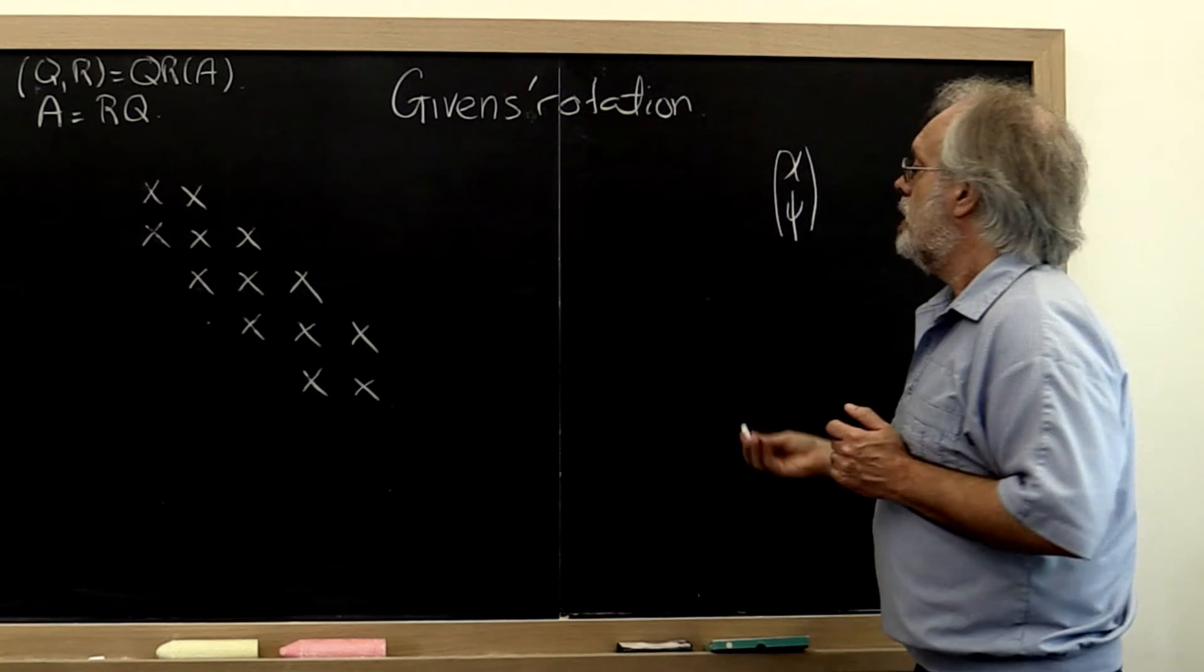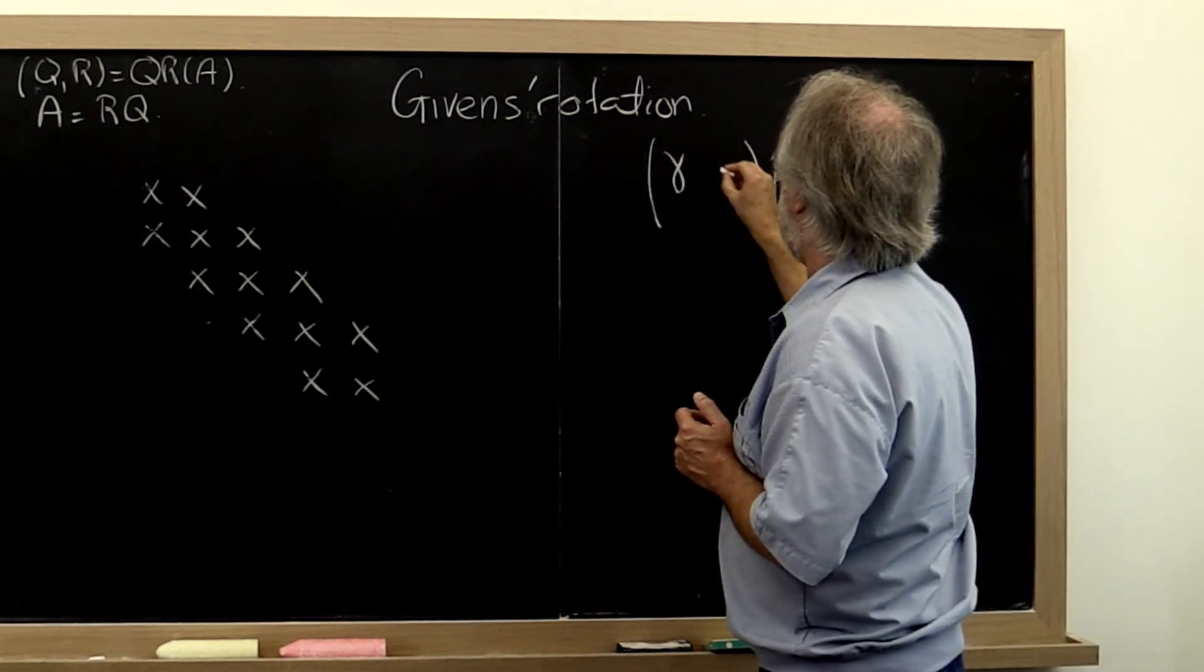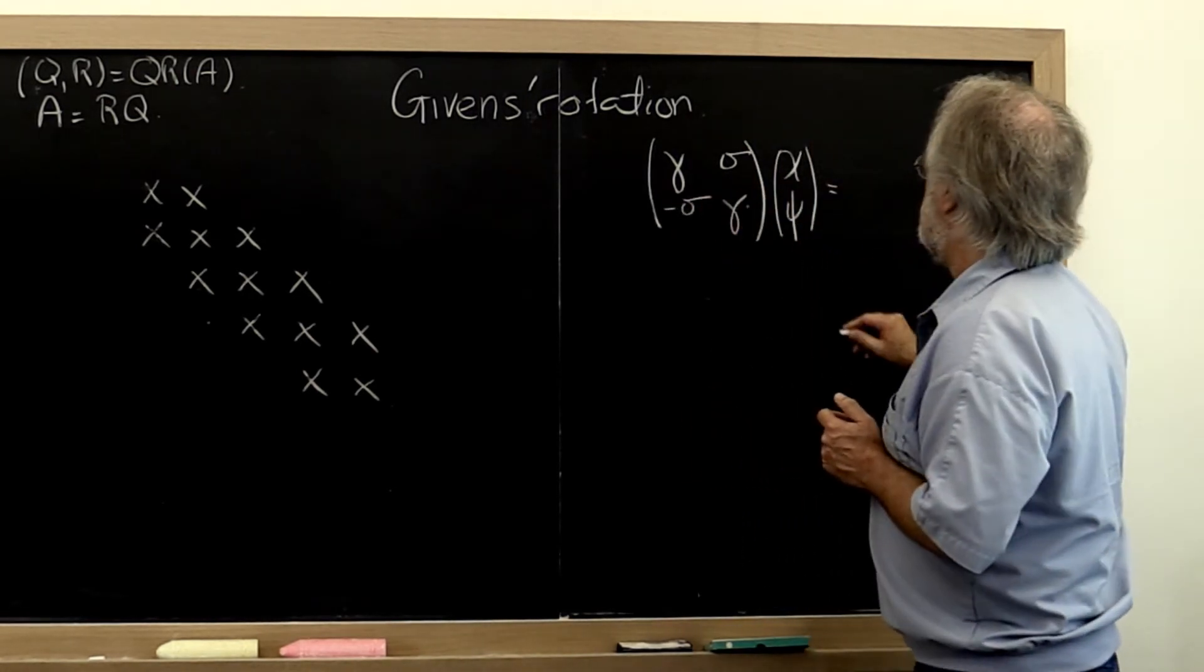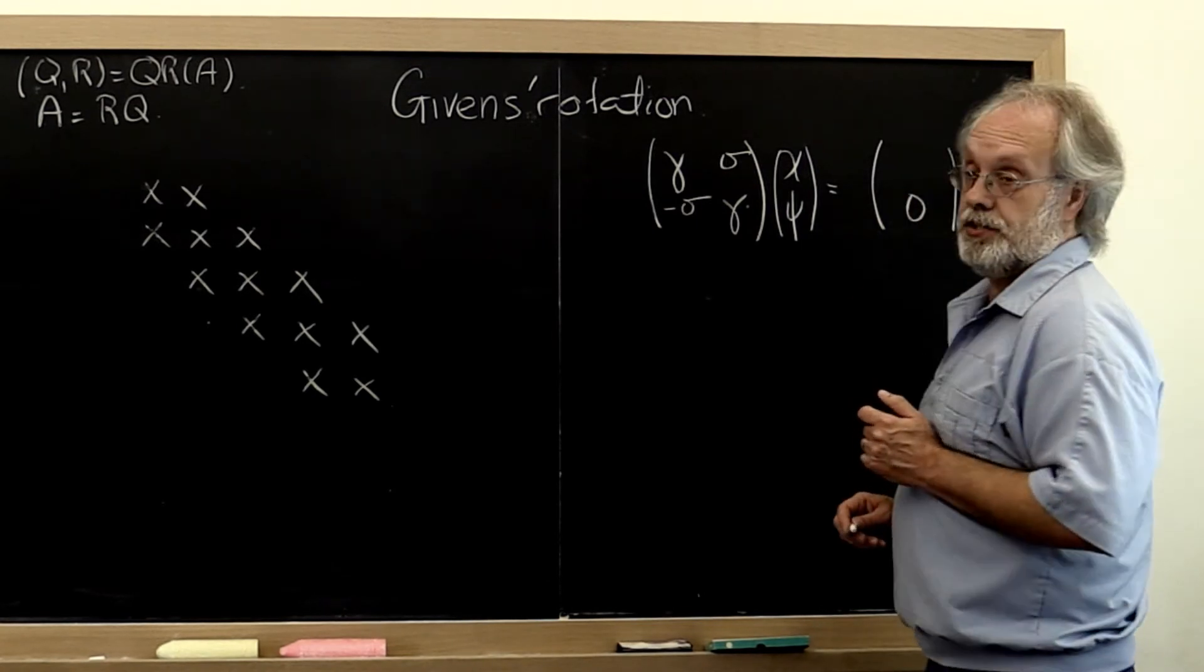then one can compute a rotation, let's call it gamma sigma minus sigma gamma, such that the result is equal to something that has a zero here.